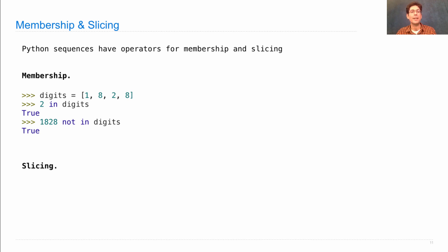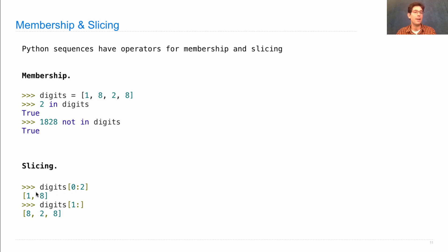Slicing allows you to create new sequences that are only parts of the original one. If I take digits, which is 1828, and slice it using this operator — which looks like the element selection operator but has a colon in the middle — I get back a new list with some of the elements but not all. The convention is that these are indices with the same meaning as a range: the starting index is inclusive and the ending index is exclusive. So going from index 0 to index 2 gives me elements 0 and 1 but not 2 — that's 1 and 8.